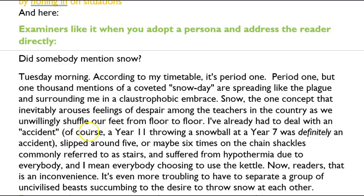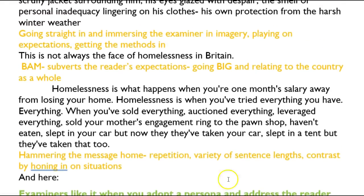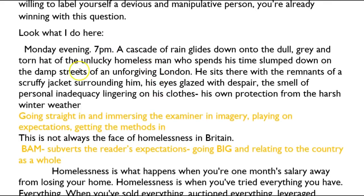'I've already had to deal with an accident — of course a year 11 throwing a snowball at a year 7 was definitely an accident.' I love the use of italics there to show sarcasm. 'Slipped around five or maybe six times on the chain shackles commonly referred to as stairs, and suffered from hypothermia due to everybody — and I mean everybody — choosing to use the kettle.' This is hyperbole and over-exaggeration, again linked to those really concrete examples of things that could happen. You can see how the techniques Kimi talked about — repetition, hammering things home, subverting expectations — all come through here.